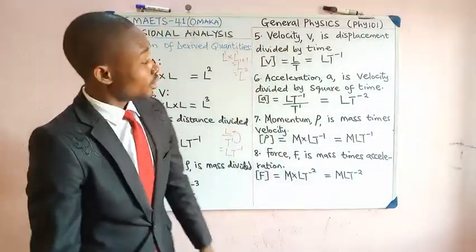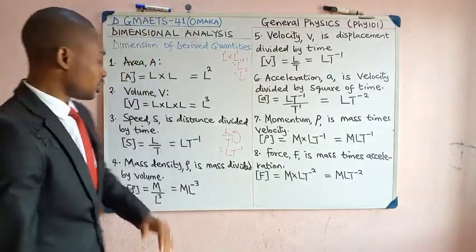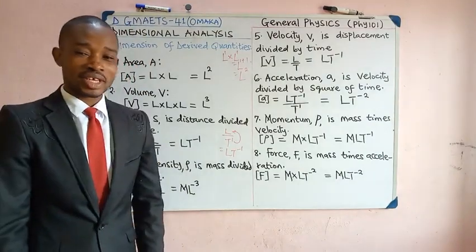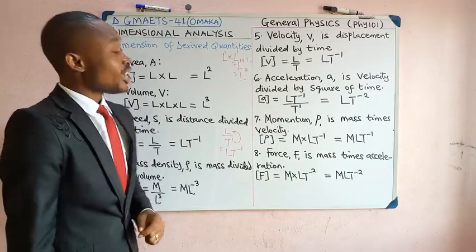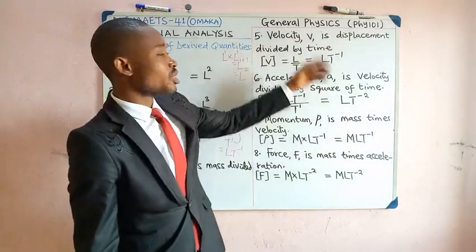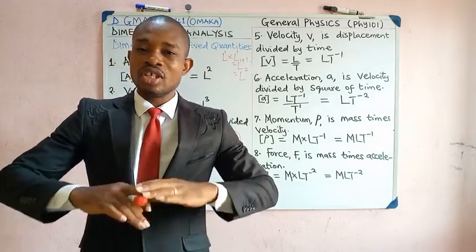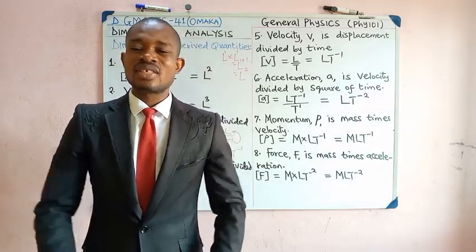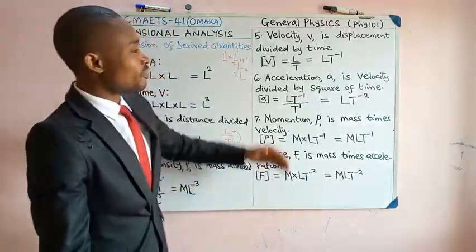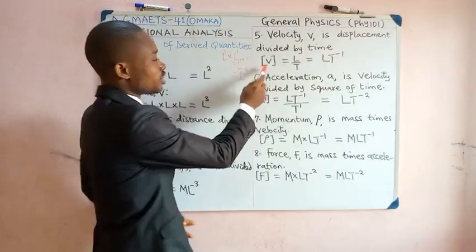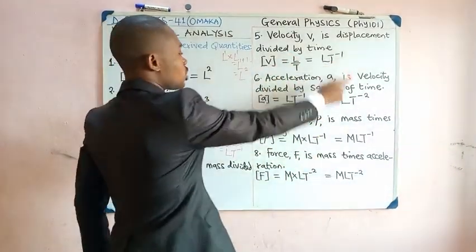The dimension of velocity is the same as the dimension of speed. Velocity by definition is displacement divided by time, and displacement is simply change in position — change in distance — so it still has the same dimension as length. Therefore, the dimension of velocity is L divided by T, giving LT⁻¹.